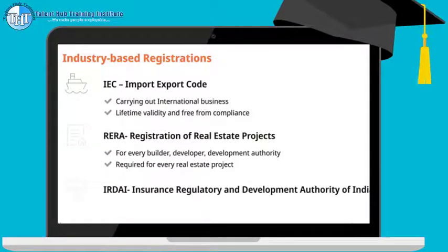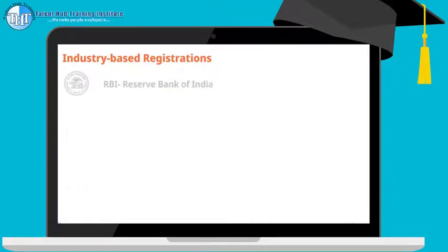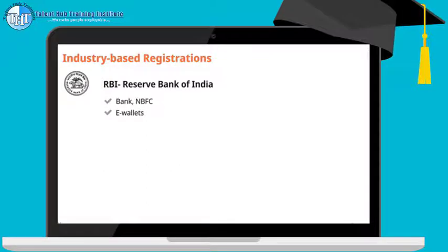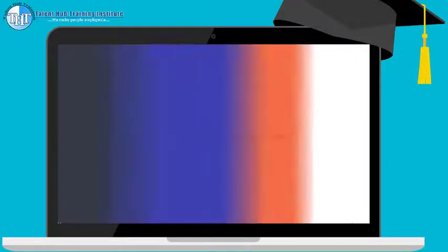IRDAI (Insurance Regulatory and Development Authority of India): a license from IRDAI is mandatory to carry on services related to insurance. One can avail a license for different types of insurance such as life insurance or general insurance. RBI (Reserve Bank of India): a license from RBI is required to carry on banking activity, providing loans and advances or financial assistance such as NBFC, and for providing services related to e-wallets. SEBI (Securities and Exchange Board of India): a license from SEBI is required for every person providing services of stock broking or sub-broking.